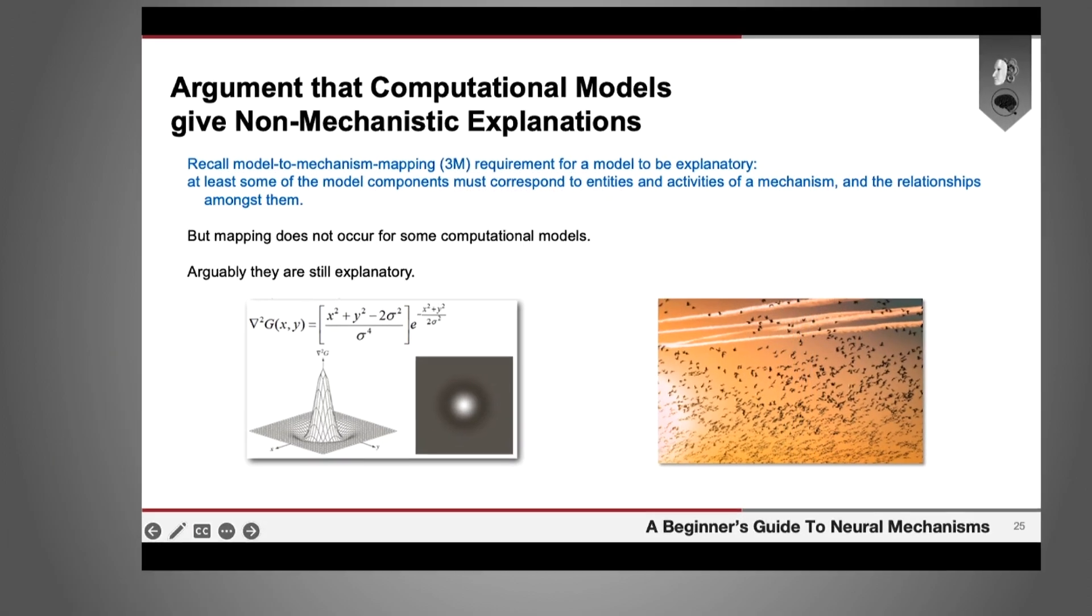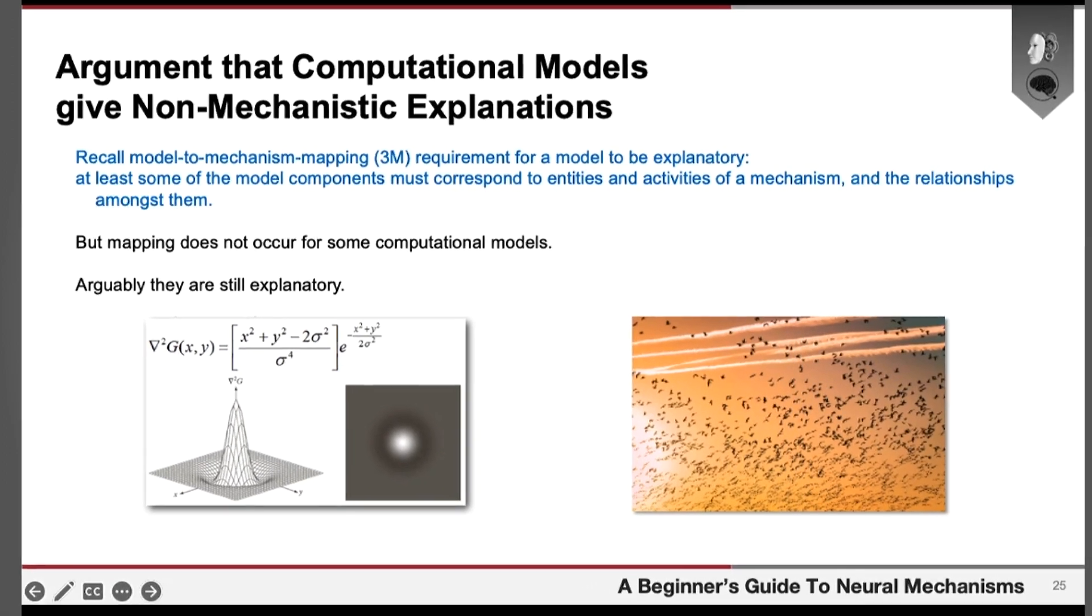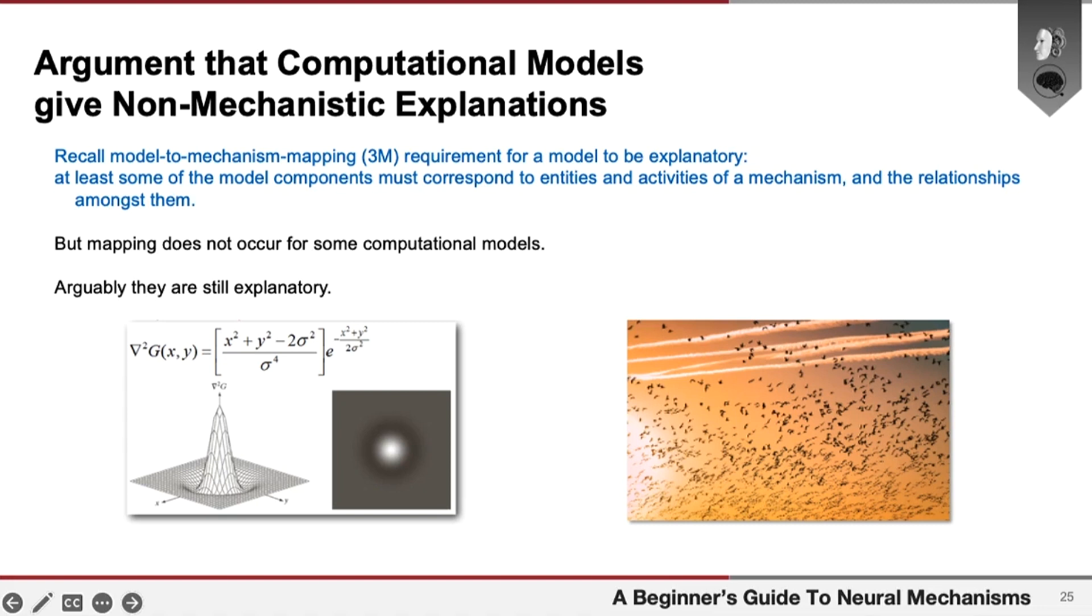One of the debates that's been going on recently in philosophy of neuroscience is between people that think that all explanations in neuroscience are mechanistic ones, and people like myself, Frances Egan, and Daniel Weiskopf, who think that there are some kinds of explanations in neuroscience which are fundamentally not mechanistic ones.